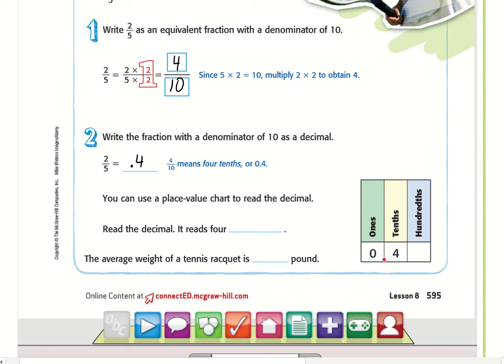You can use the place value chart to read the decimal. So 4 tenths, that's in the tenths place. The reason it's in the tenths place is because our denominator is 10. So the average weight of a tennis racket is 0.4 pounds.